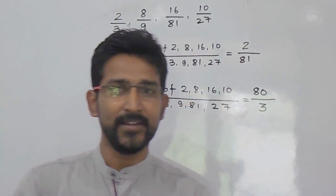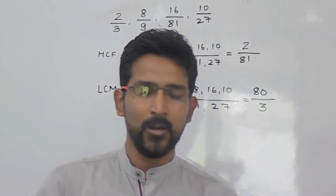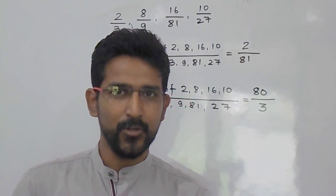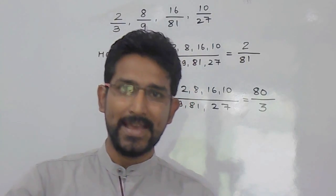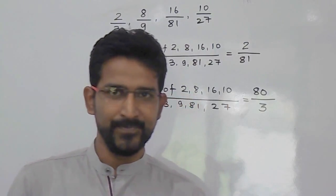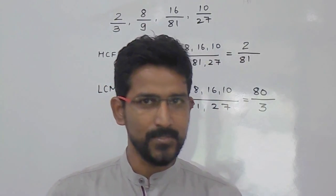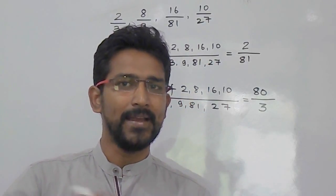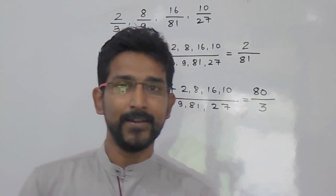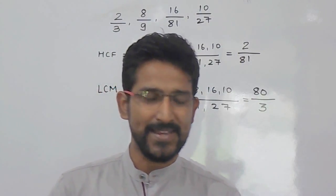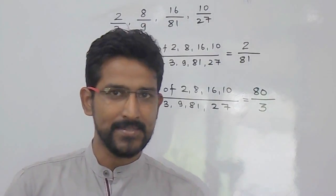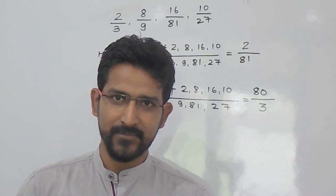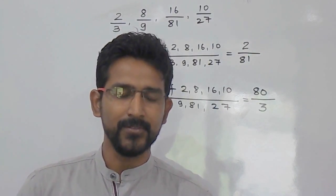So this is how we can find out the LCM or HCF of given fractions. When finding HCF of fractions, take the HCF of the numerators and LCM of the denominators. When finding LCM of fractions, take the LCM of the numerators and HCF of the denominators. To find HCF and LCM in just a few seconds, refer to our earlier videos on the LCM and HCF trick. Hope you have understood how to find the LCM and HCF of given fractions. Thank you.